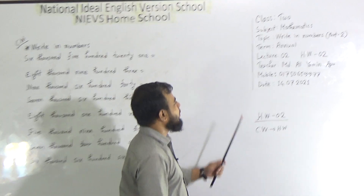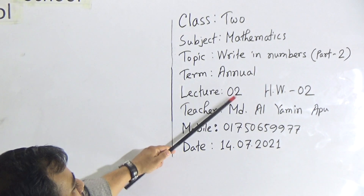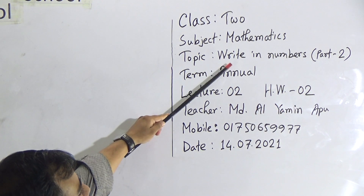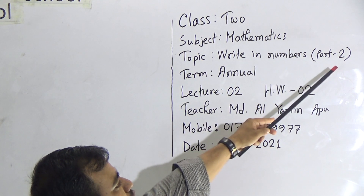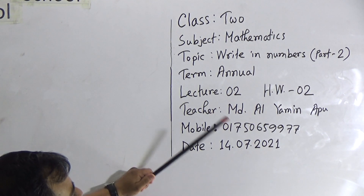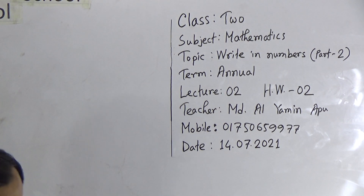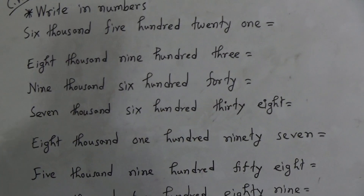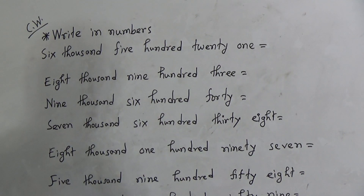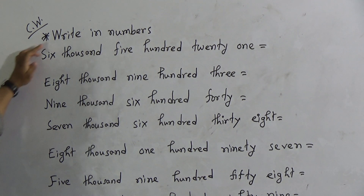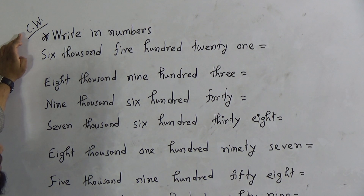Our lecture number is two and our chapter number is also two. Our topic is 'Writing Numbers, Part Two.' In the first class, your Emdat sir has already discussed writing numbers in Part One. Today we will discuss writing numbers again in the second class of the annual term examination of 2021. It's your CW work, so write it down. Write 'CW' at the top.